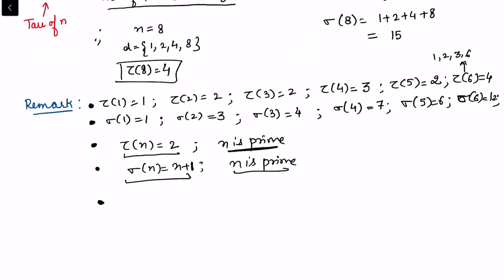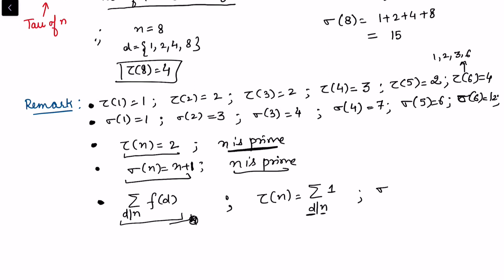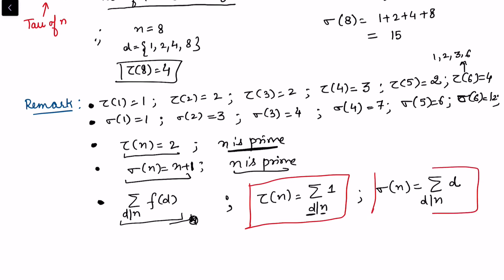Using summation notation over divisors d|n, we can write tau(n) as the sum of 1 over all d dividing n — each divisor contributes a count of 1. Similarly, sigma(n) is the summation of d over all d dividing n. These two expressions in arithmetic function form will be used repeatedly in other properties of tau and sigma.